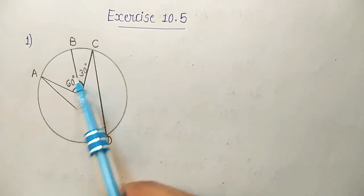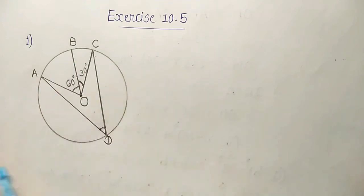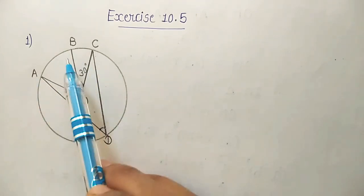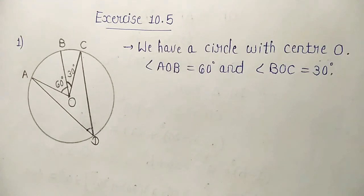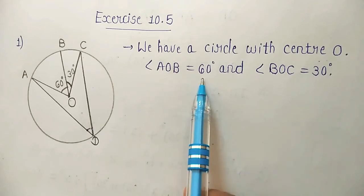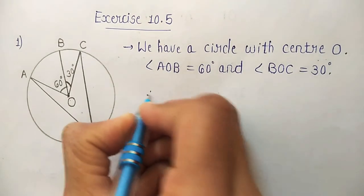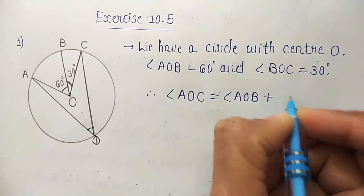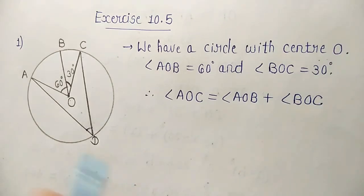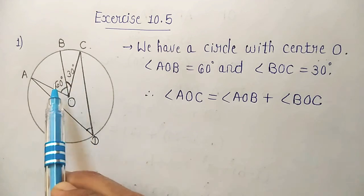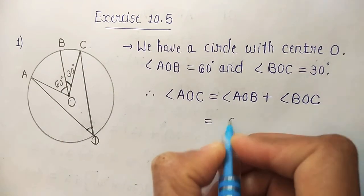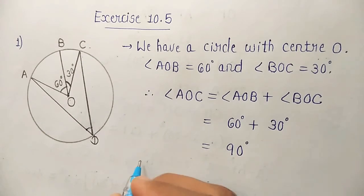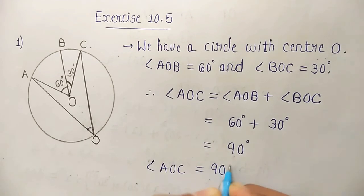So, to find it, we have two values of two angles: BOC and AOB. We will get the value of angle AOC if we add angle AOB plus angle BOC. So, we will write: we have a circle with center O. Angle AOB is 60 degrees and angle BOC is 30 degrees. Angle AOC will be equal to angle AOB plus angle BOC, that is 60 degrees plus 30 degrees, which equals 90 degrees. So, angle AOC is equal to 90 degrees.